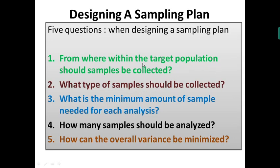For the first question — where to collect the sample — you reach the target population, say a land of 5 acres or 2 hectares, and decide from where exactly to collect. For the second question — what type of sample — if you go to the northern side you may get wet soil, and if you go to the western side you may get dry soil. Therefore, what type of sample you collect is also very important, as samples from different sides may differ.